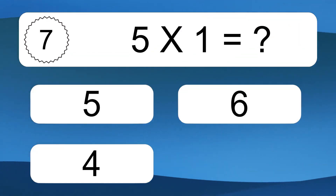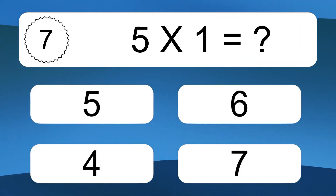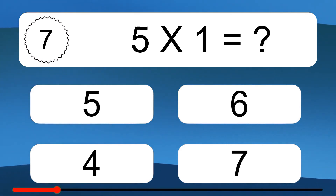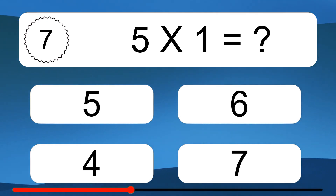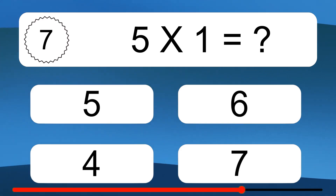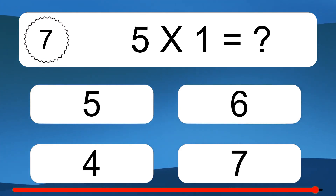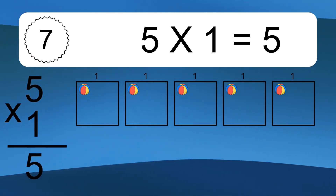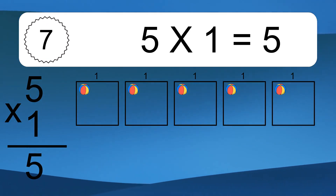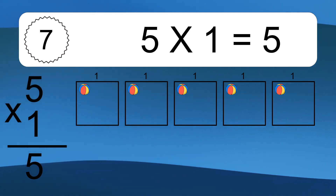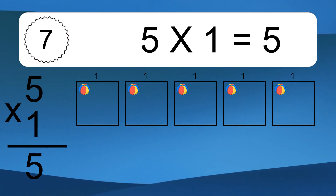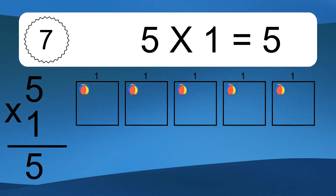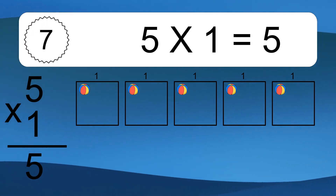5 times 1 equals what? We have 5 boxes, and each box has 1 colorful ball inside. If you count all the balls in all the boxes together, you will have 5 times 1 balls. This equals 5 balls.